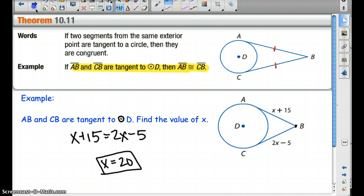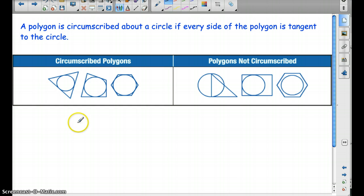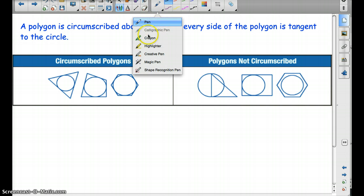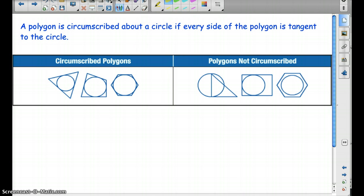Last concept here about circumscribed polygons. So remember, circumscribed is on the outside. So a polygon is circumscribed about a circle if every side of the polygon is tangent to the circle. Here's some examples of circumscribed polygons. And these ones are not because every side has to touch that circle at one point.